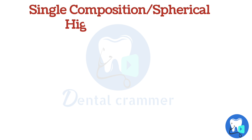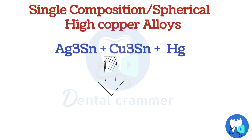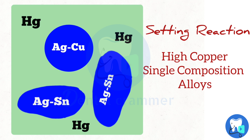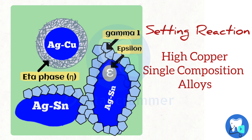Moving on to the setting reaction of single composition high copper alloys: the gamma 1 phase acts as a filler in the matrix, the eta phase surrounds the silver copper eutectic alloy, the gamma phase is present in lathe-cut form, and epsilon phase is present within the gamma phase. Here is the animation showing the setting reaction of single composition alloys. As the reaction occurs between alloy and mercury, phases are formed. The eta phase surrounds the silver copper eutectic alloy and consists of meshed rod-like crystals.